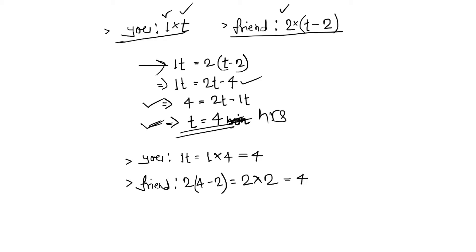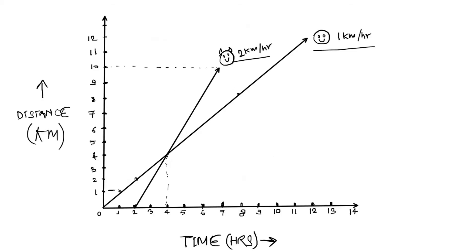Also, if you want to find out what the distance traveled by you and your friend respectively will be at that point, you can substitute the value of t into these two equations to get the answer. I hope that was helpful to understand how Linear Algebra helps us solve for unknowns, as we read in the definition.